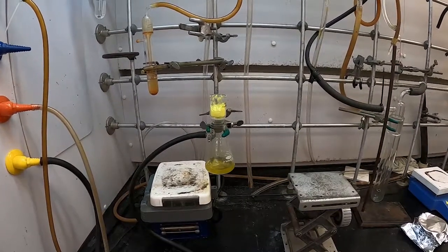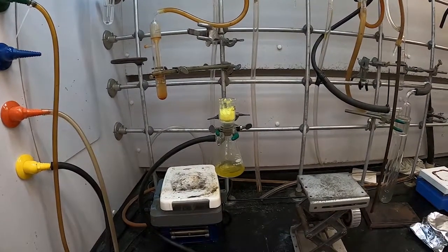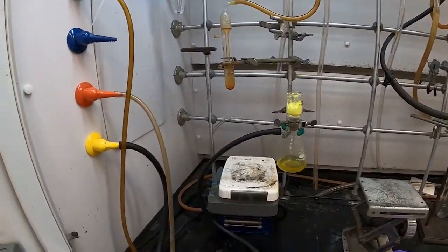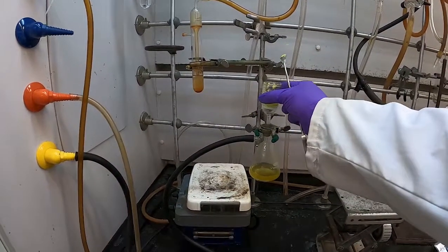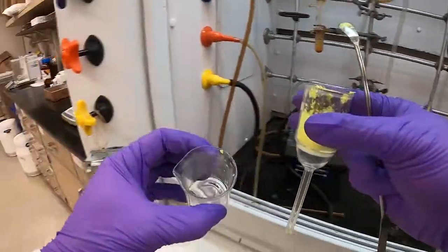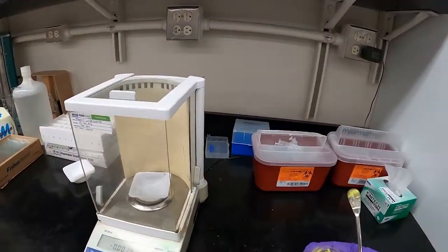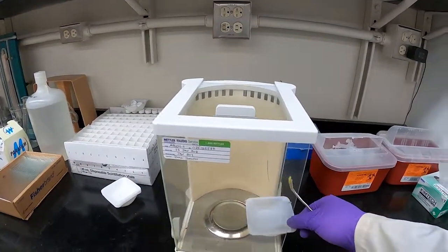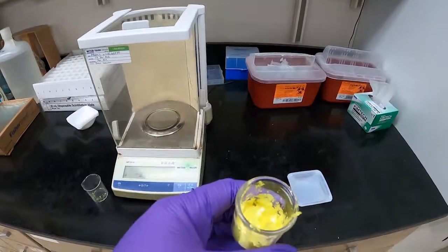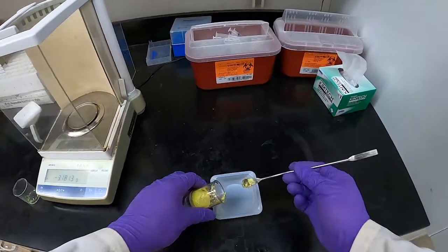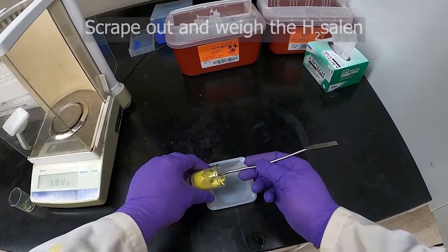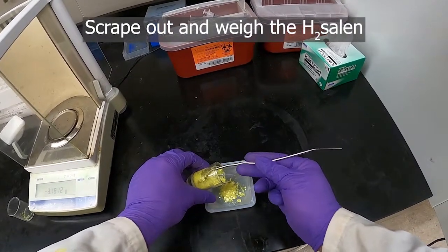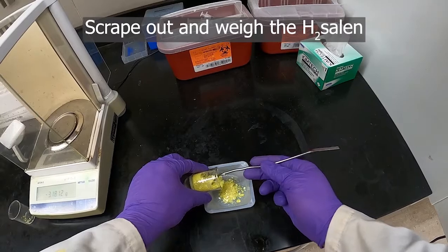So our saline has dried on the vacuum now. Go ahead and turn the vacuum off. Come over here, got a weigh boat already on the balance. Scrape this lovely yellow crystalline compound into the weigh boat here.